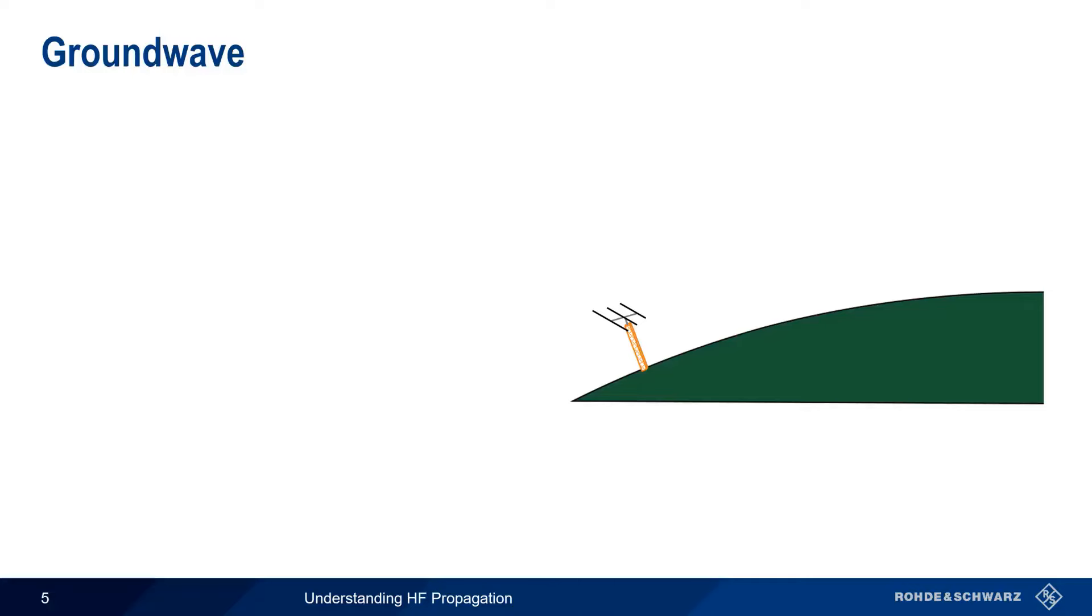If we don't have a direct Line of Sight to another station, Ground Wave is a possible solution. Ground Wave, sometimes called surface wave, involves signals propagating along the surface of the Earth. Interaction between the lower part of the transmitted wavefront and the Earth's surface causes the wave to tilt forward, allowing the signal to follow the curvature of the Earth, sometimes well beyond Line of Sight.